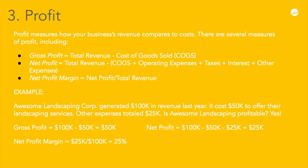To get net profit, we also want to subtract other expenses, giving us a net profit of $25,000. Finally, the net profit margin is the net profit of $25,000 divided by the total revenue of $100,000. That gives us a 25% profit margin, which is pretty high given the small business average.